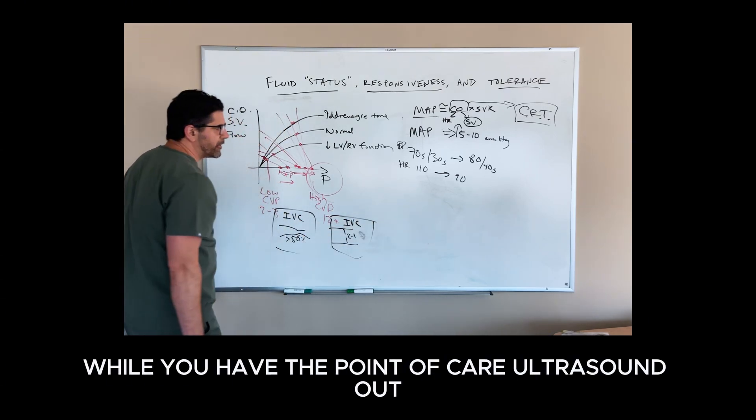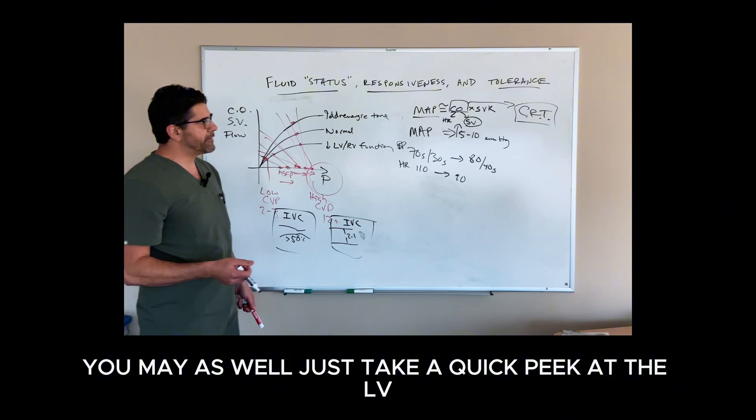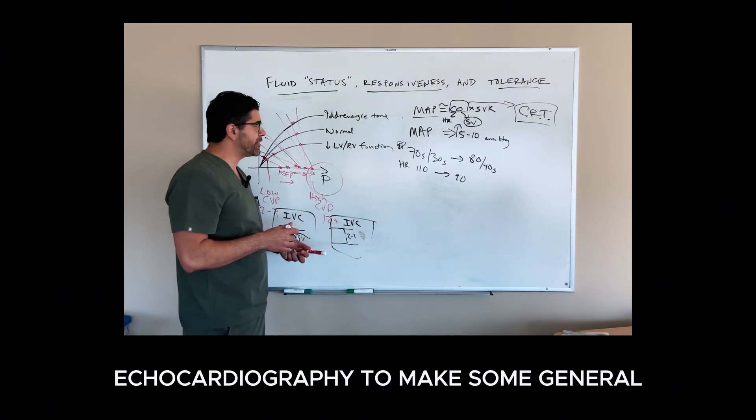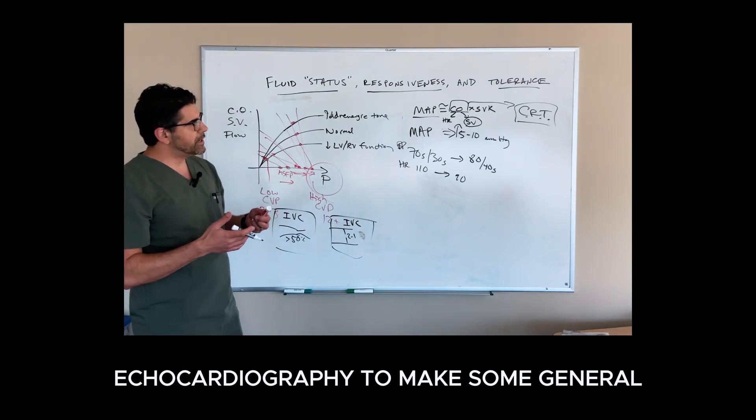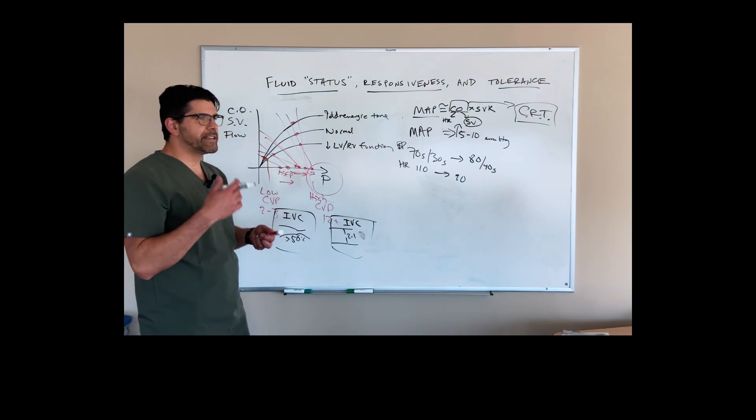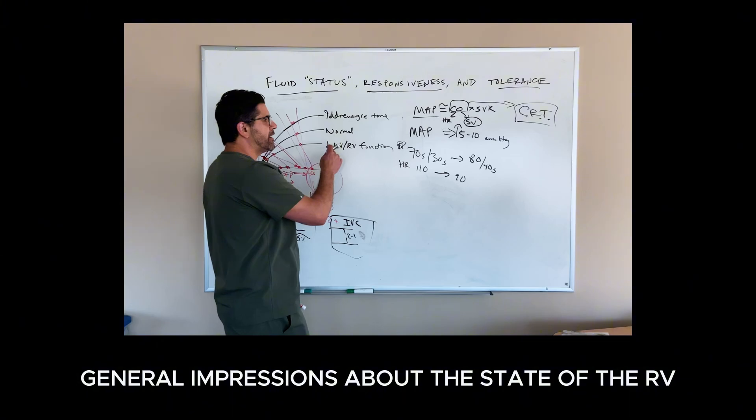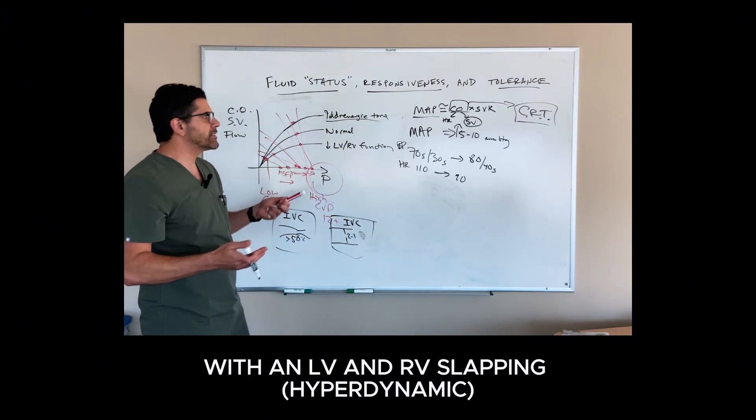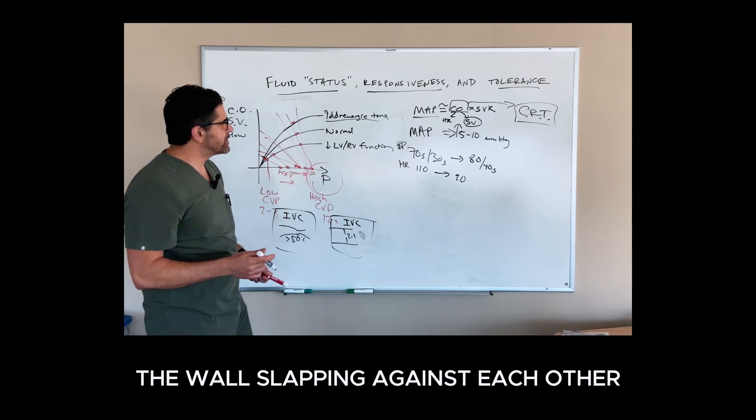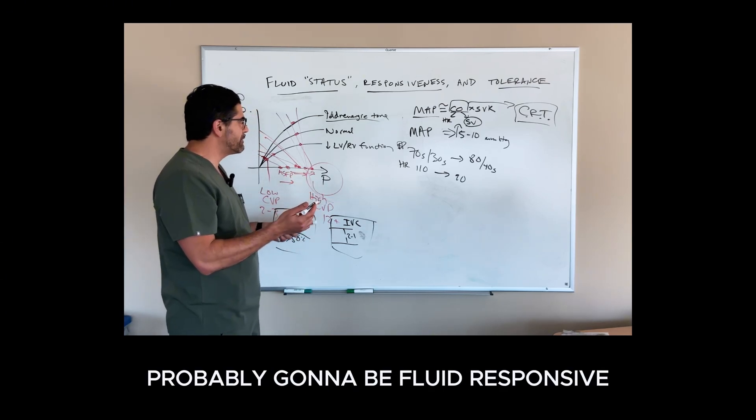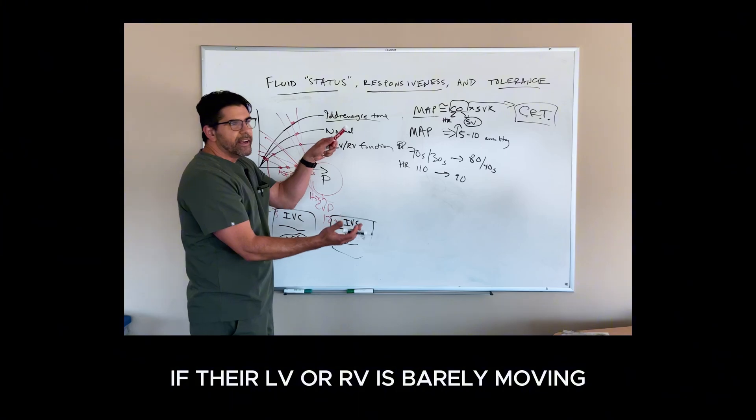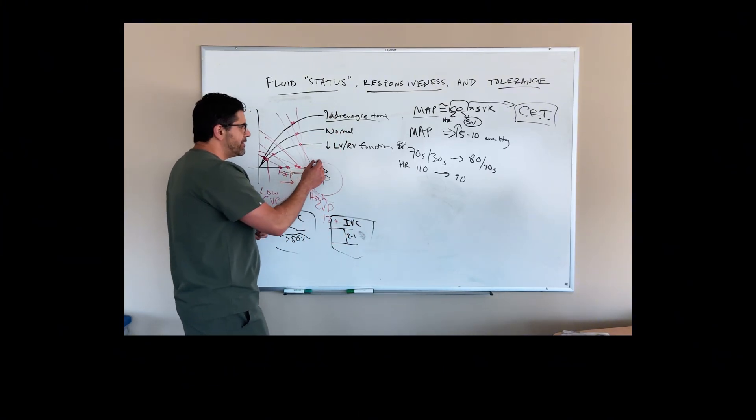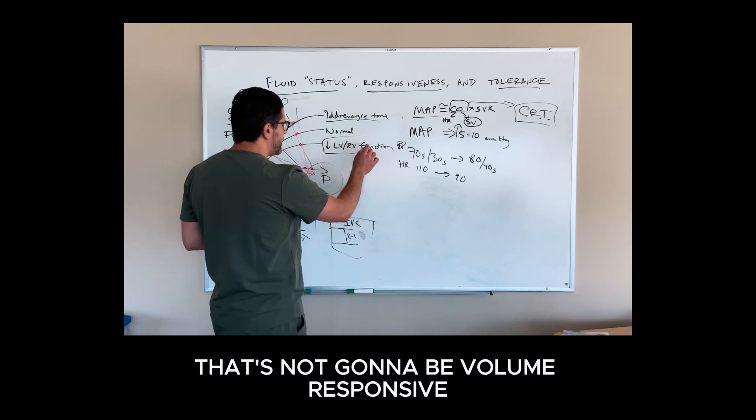Then of course, while you're at the point of care ultrasound, you may as well just take a quick peek at the LV and RV. You don't have to be an expert in echocardiography to gain some general impressions about the state of the RV and the LV. If you have somebody with an LV and RV slapping, the walls slapping against each other, that's somebody that's underfilled, probably going to be fluid responsive. Similarly, if their LV or RV is doing this and barely moving, that is probably not something that's going to be very volume responsive.